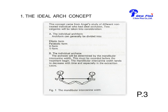The ideal arch concept is composed of: A, the individual arch form — we find that each patient will have their own individual arch — and B, the individual arch size. So arch form and arch size will be set first. For example, for the mandibular arch, we use the intercanine width as the reference, and this will not be changed throughout the treatment. Number two, we will talk about individual elements or each segment of the arch wire: the anterior segment, the canine segment, the premolar segment, and the molar segment for non-extraction therapy.